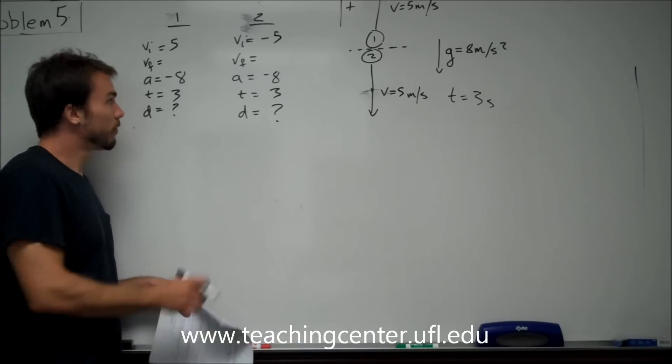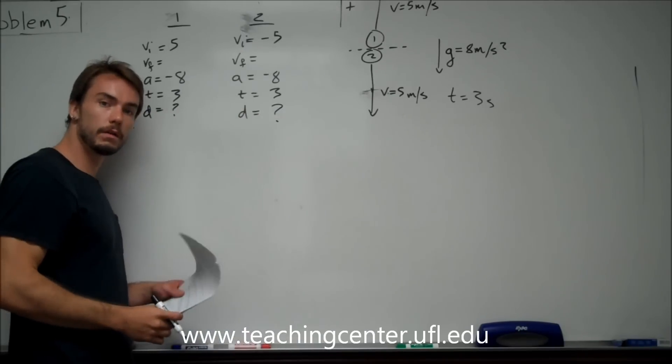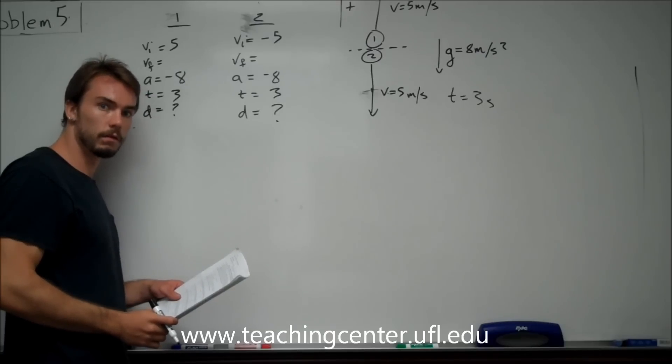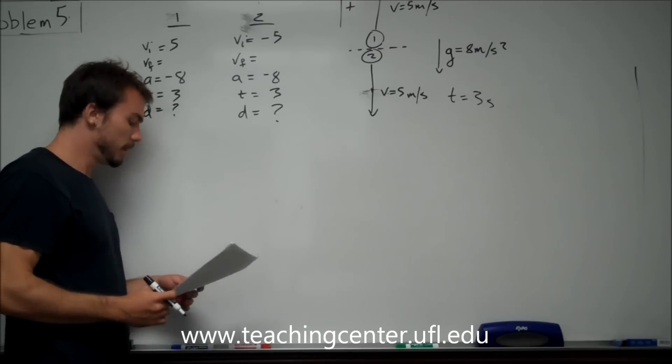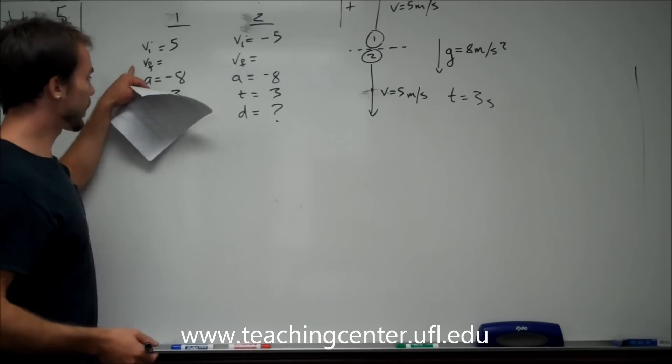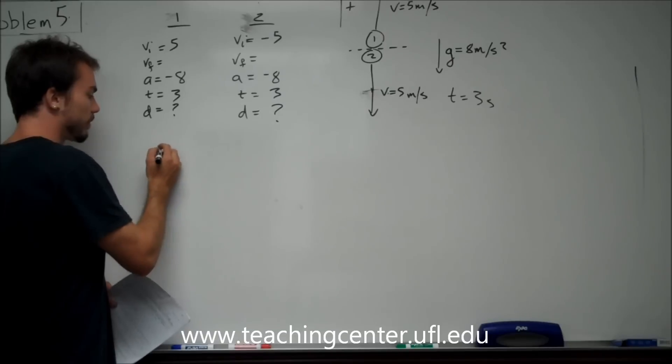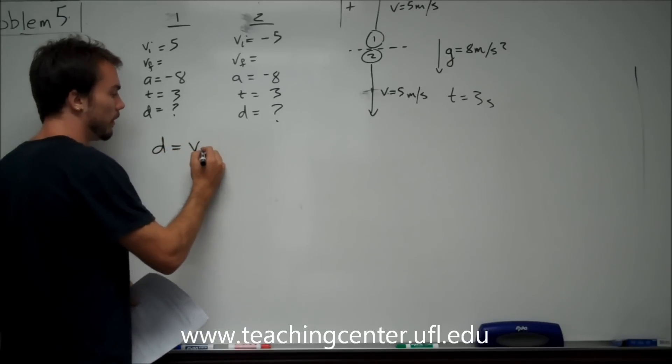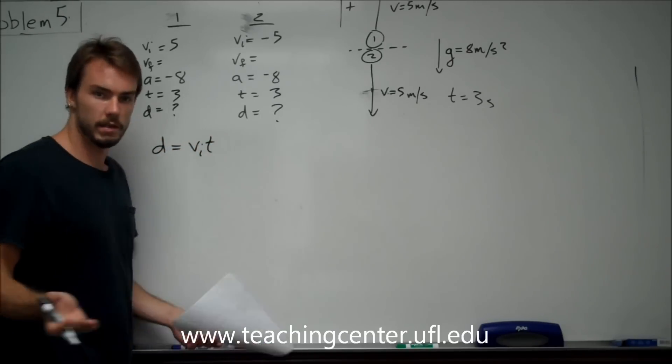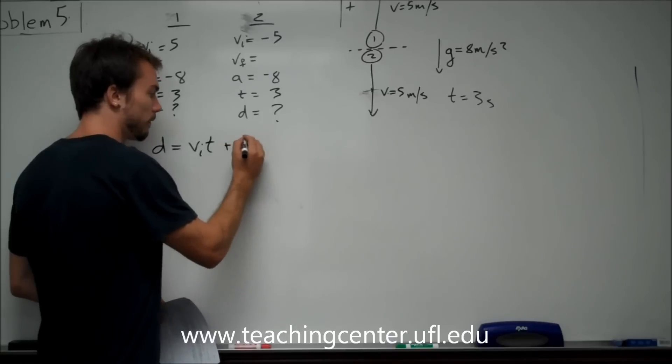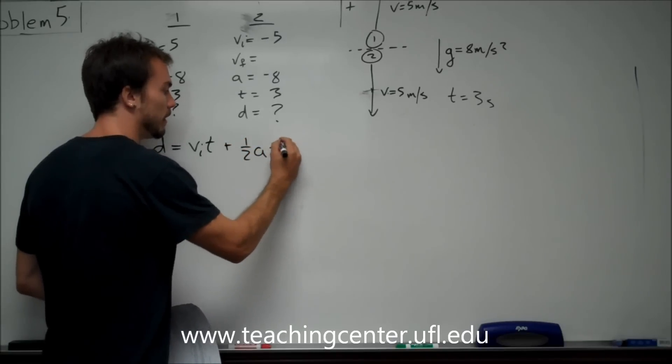So, once you have 3 of the 5, then you can solve for either of the other 2. You just have to pick the right equation. Looking at this, we can say, well, we don't care about the final velocity, so the equation we're going to use is going to be D is equal to V_i*T, or V_0*T, or however it's presented for you guys, plus 1/2 AT squared.